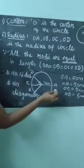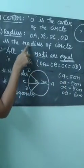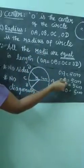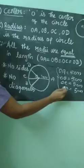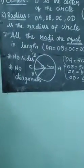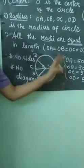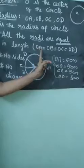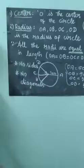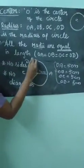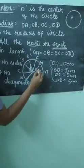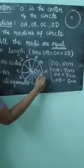OA is one radius. OA, OB, OC, OD — there are many radii in one circle. So OA = OB = OC = OD. There are also OE, OF, OG — like the same way, there are many radii in one circle and they all must be equal.